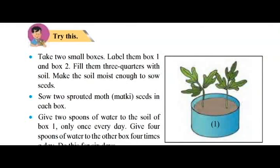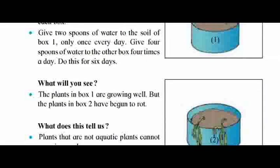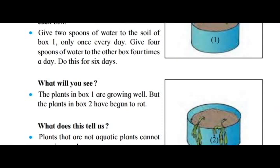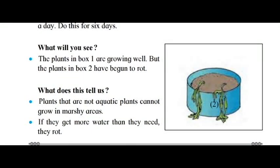Try this experiment. Take two small boxes, label them box 1 and box 2. Fill them three-quarters with soil. Make the soil moist enough to sow seeds. Sow two sprouted moth seeds in each box. Give two spoons of water to the soil of box 1 only once every day. Give four spoons of water to the other box four times a day. Do this for six days. What will you see?